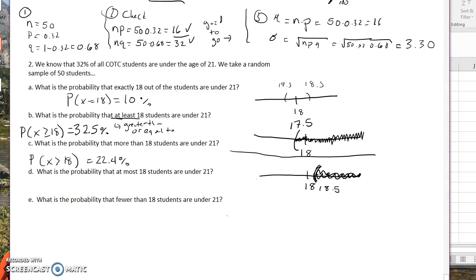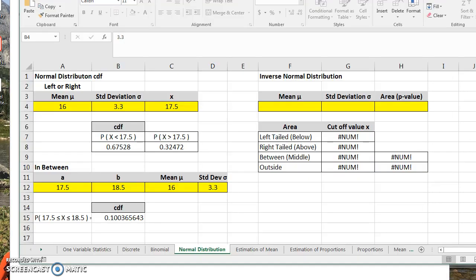All right, so now what is the probability that at most 18 students are under the age of 21? At most. When we say at most, what we mean is up to and including, right? So that is up to and including 18. So we're actually going to want to use 18.5 here for our continuity correction. So this is the probability that X is less than or equal to 18. We're going to put in actually 18.5 here, and we're going to pick less than, so this would be 77.6%.